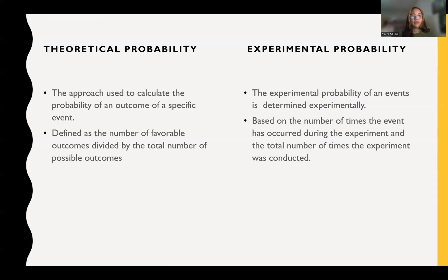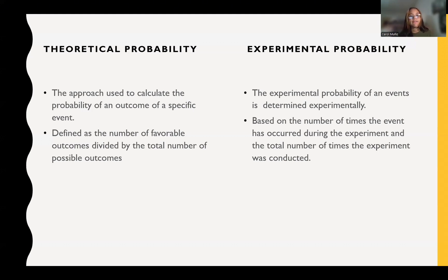Let's start by defining what theoretical probability and experimental probability are. When we're talking about theoretical probability, we haven't actually performed an experiment — this is all calculation-based. It is defined as the number of favorable outcomes divided by the total number of possible outcomes.